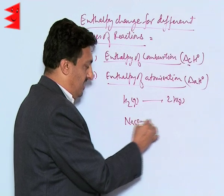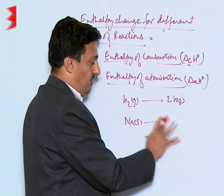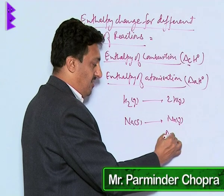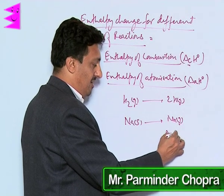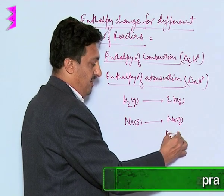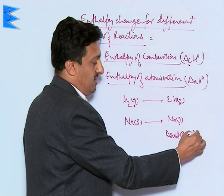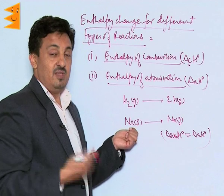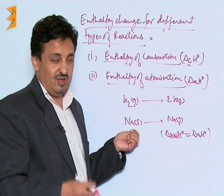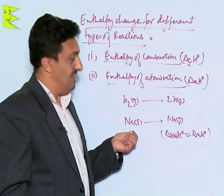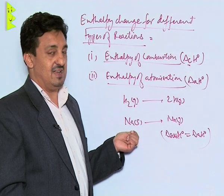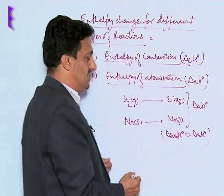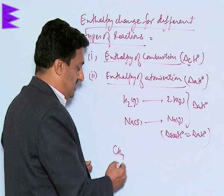Similarly, if we have sodium in the solid state and we give heat, we get sodium gas. In this case it is also called enthalpy of sublimation, but this enthalpy of sublimation is equal to the enthalpy of atomization, because we are converting sodium atoms from the solid state to the gaseous state. We cannot get molecules of sodium as such, so all these indicate enthalpies of atomization.